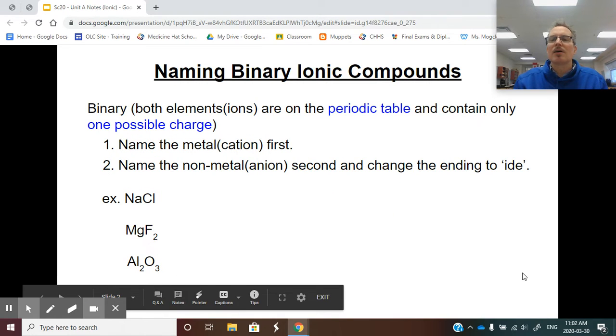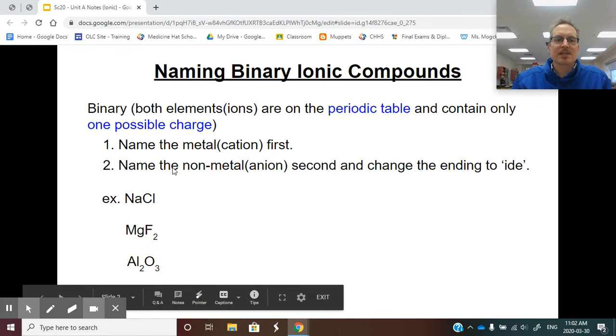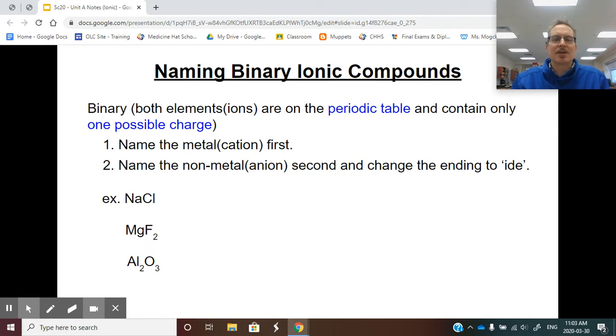Let's look at how we would go about naming these. We're going to start with naming binary ionic compounds, which means both substances are straight off the periodic table. Most importantly, the metal only has one possible charge. I need you to open up your periodic table. For the first example, NaCl, put your finger on Na, put your finger on Cl.